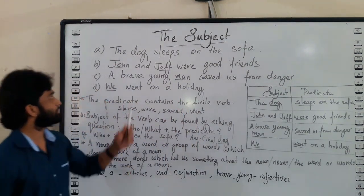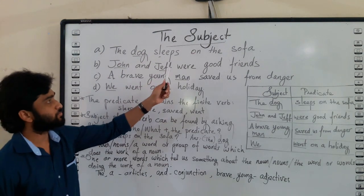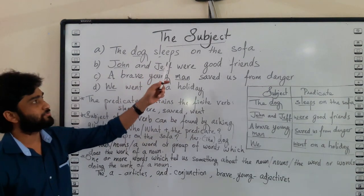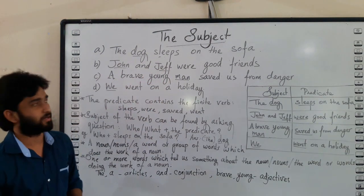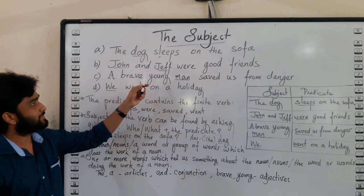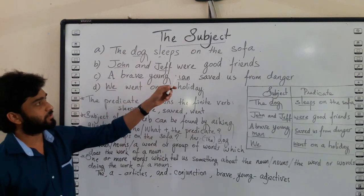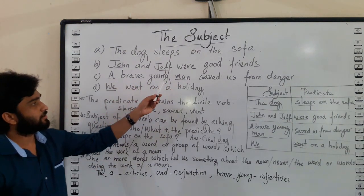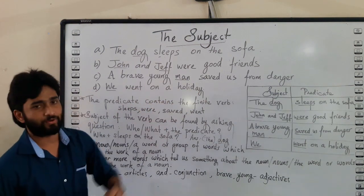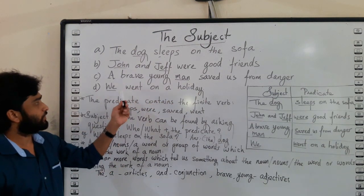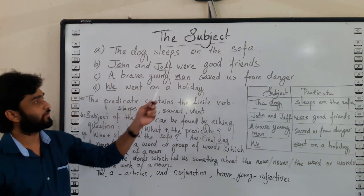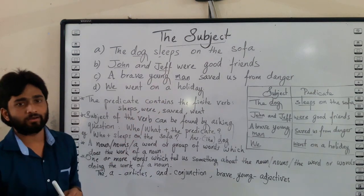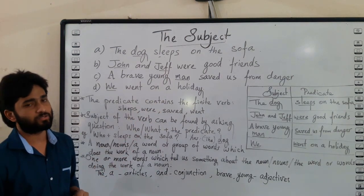So the first sentence is: 'The dog sleeps on the sofa.' Second: 'John and Jeff were good friends.' Third: 'A brave young man saved us from danger.' Fourth: 'We went on a holiday.' So these are the sentences we will be working with.